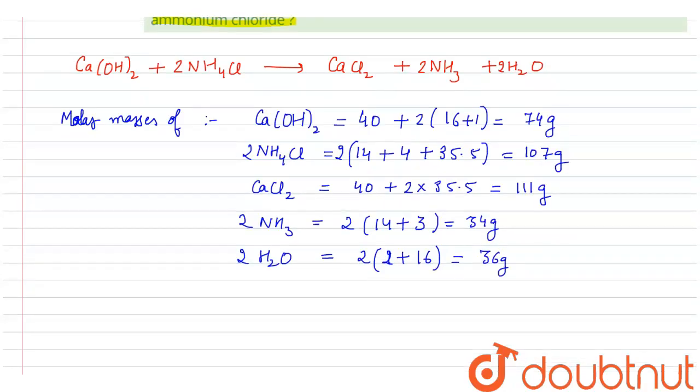Now we have the molar masses, so we have to calculate the mass of calcium hydroxide for 4.28 grams to decompose ammonium chloride. We see here that 107 grams of NH4Cl is decomposed by 74 grams of calcium hydroxide.